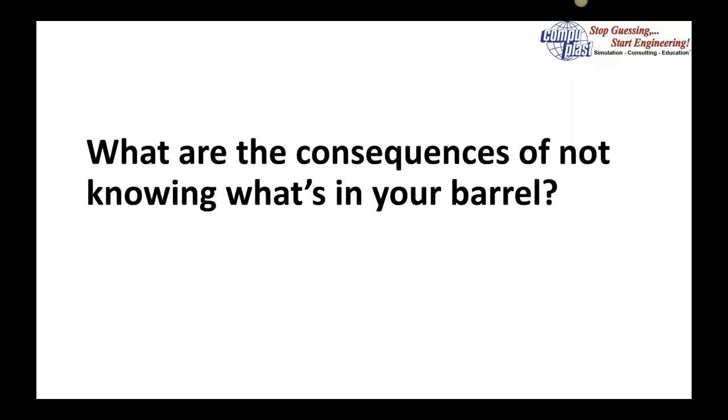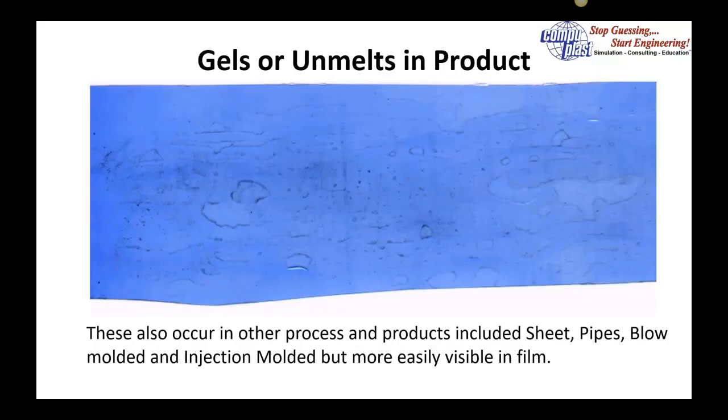Let's begin by trying to understand some of the consequences of not knowing what's in your barrel and how that screw affects the material you're processing. A very common problem we find are gels or unmelts. Those are two different things: gels are cross-linked materials due to overheating, unmelts are particles that haven't had enough energy and haven't completely melted. These are generally more easily visible in film or clear parts.